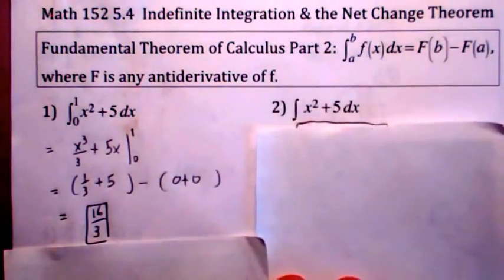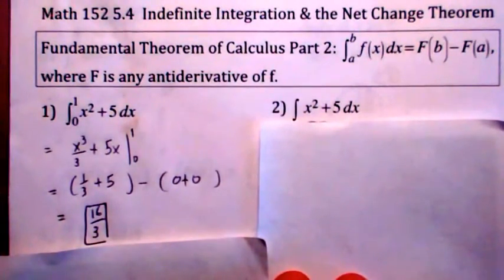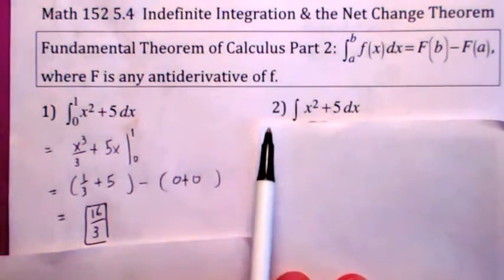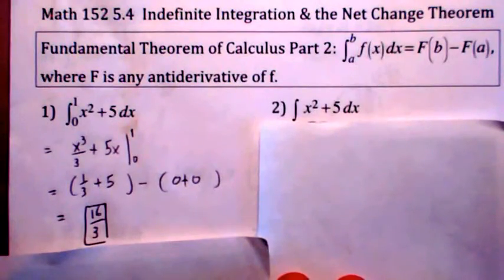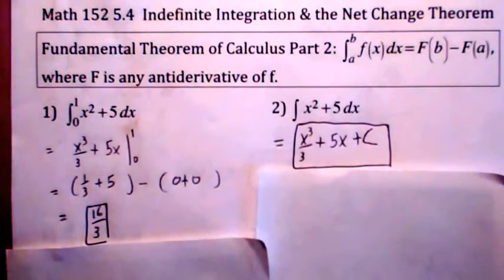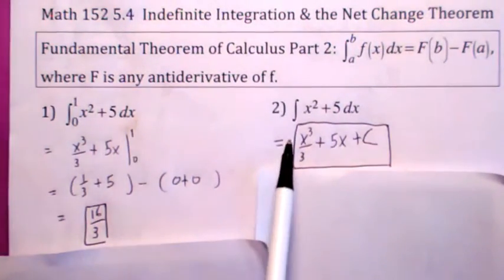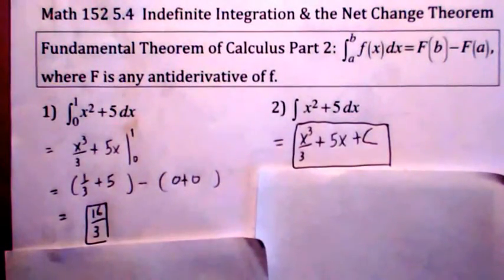If you see this integral sign with no limits of integration, that is just another way to write the most general antiderivative of x squared plus 5. We call this the indefinite integral of x squared plus 5. All it means is the most general antiderivative, so you better put a plus c in your answer. The indefinite integral of x squared plus 5 dx equals x cubed over 3 plus 5x plus c.